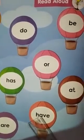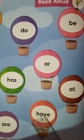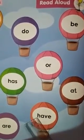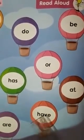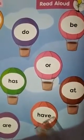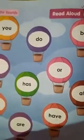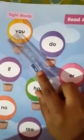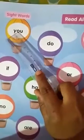H-A-V-E — Have. So children, in this way again we will read all the sight words. We will repeat it. Y-O-U.